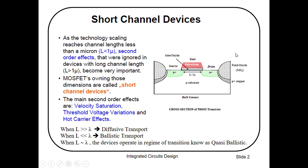Here you have a simple MOSFET structure with the gate, source, drain, and channel. If the channel length L is less than one micrometer, the device is known as a short channel device. Lambda is the electron mean free path. When the channel length is greater than the electron mean free path, the transport is diffusive. When the channel length is less than the electron mean free path, the transport is ballistic. When the channel length is approximately equal to the electron mean free path, the device operates in the quasi-ballistic regime.